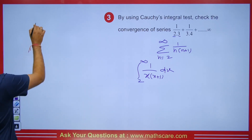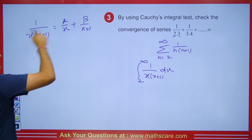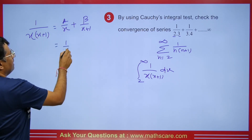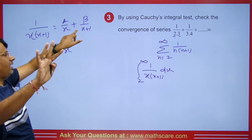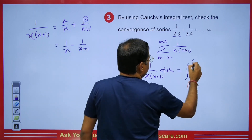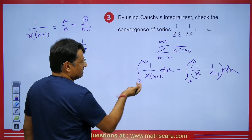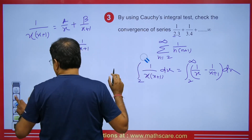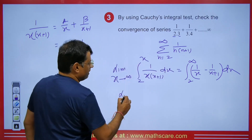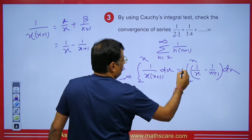Let's do the partial fraction of 1/(x(x+1)). Using the short trick for partial fractions, we write it as A/x + B/(x+1). Putting x=0, we get A=1. Putting x=-1, we get B=-1. So 1/(x(x+1)) = 1/x − 1/(x+1). We substitute this and get the integral from 2 to x of (1/x − 1/(x+1)) dx, with limit x tends to infinity.